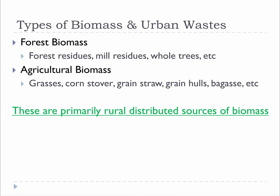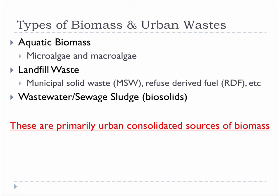I would like you to consider categorizing the five main sources of biomass into two categories. The first is rural distributed sources like forests and fields. These sources are generally found in country settings — they are often enormous but spread out, requiring harvest and consolidation. The second category is urban consolidated sources like landfill waste and wastewater sludge. Aquatic biomass is included because algae have considerable potential for becoming this kind of source, generally found in urban and suburban settings, already consolidated to keep our cities and towns clean.